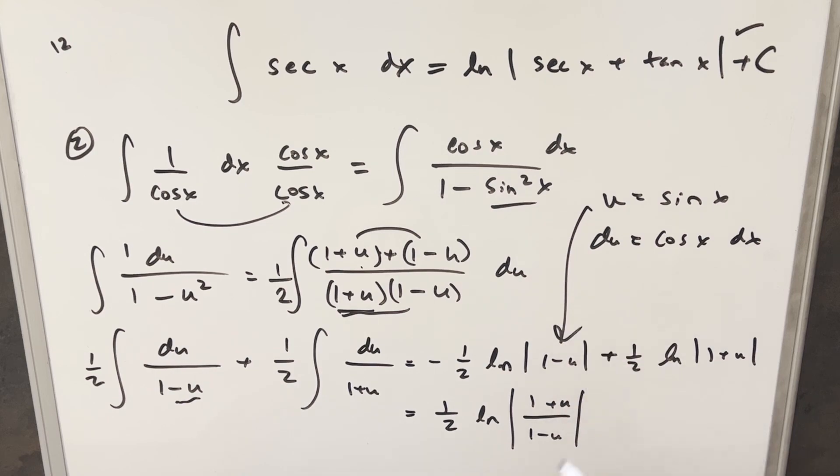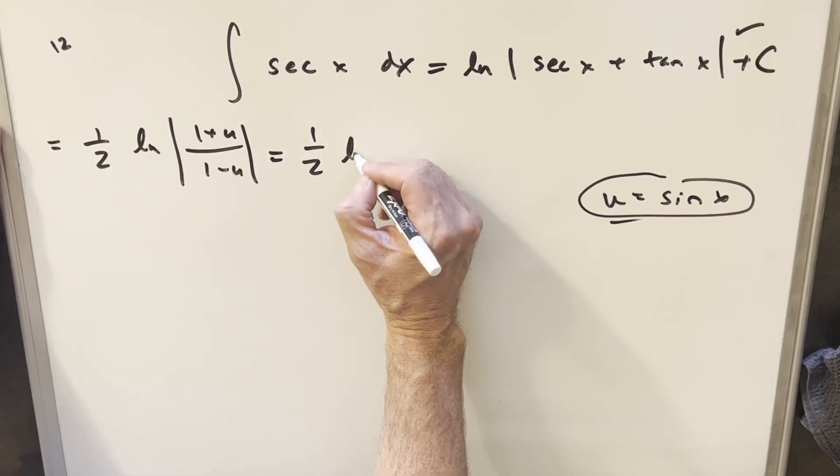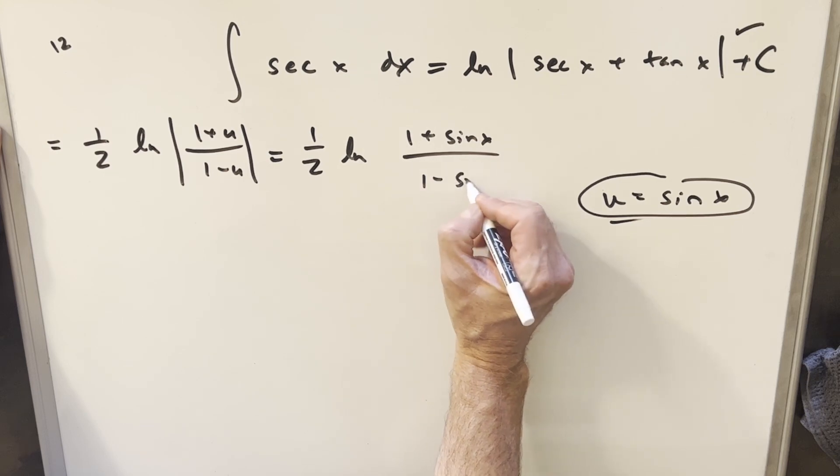And then now we can just back substitute to finish it off, but I just need to clean it up for more space. Okay, so now we're ready to back substitute with our u value. So when we write this we're gonna have 1 half natural log 1 plus sine x over 1 minus sine x. I'm just gonna take this off to the side and simplify it for a second.